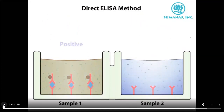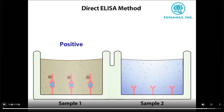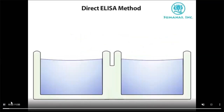For example, if we used beta-galactosidase as the enzyme, the substrate would be lactose. When we add the substrate, it binds with the enzyme and conversion of lactose into glucose or galactose produces a color change in sample one — which is positive. In sample two, the substrate enters but has nothing to bind with — negative. This is the basic direct ELISA method.